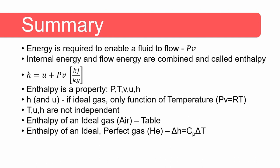To summarize: energy is necessary to enable a fluid to flow — we call this flow energy, which is pressure multiplied by specific volume. Internal energy and flow energy are usually combined to form a property called enthalpy. Enthalpy is a property, and we now have five properties: pressure, temperature, specific volume, internal energy, and enthalpy. In general, if we know the value of enthalpy and the value of another independent variable, the state is fixed and we can calculate the values of all the other properties.